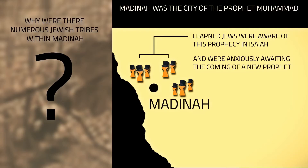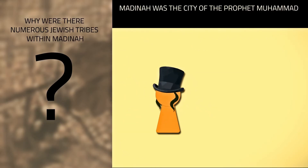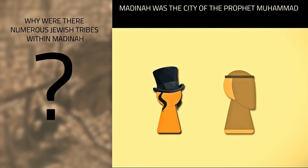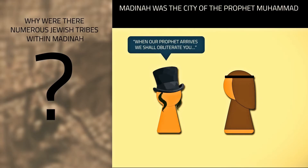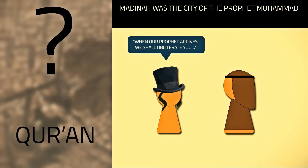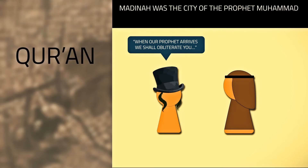Islamic history records the fact that whenever a dispute arose between the Jews and the Arabs in Medina, the Jews used to taunt their pagan Arab neighbors by saying, 'When our Prophet arrives, we shall obliterate you.' The Quran also affirms this. God says, 'Is it not a sign to them that the learned men of the children of Israel knew it as true?'